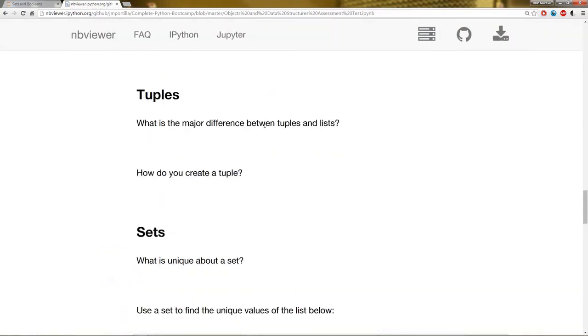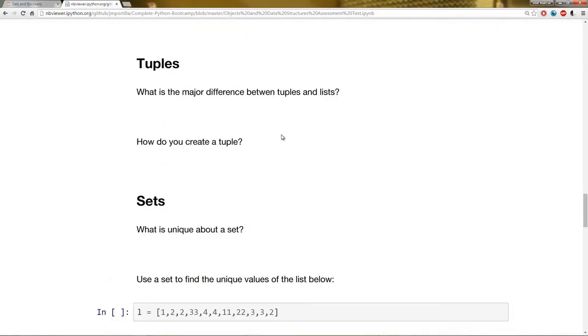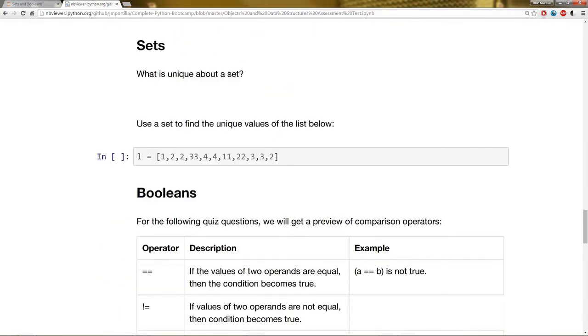Tuples. What's the major difference between tuples and lists? And how do you create a tuple? Sets. What is unique about a set? Use a set to find unique values of the list below.